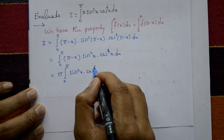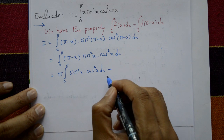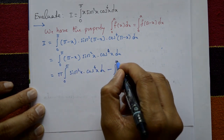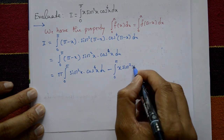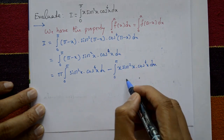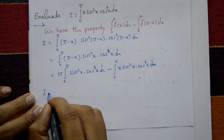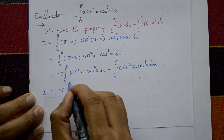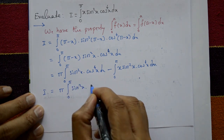π is a constant, so take it outside: π·∫₀^π sin²x·cos⁴x dx, minus the integration from 0 to π of x·sin²x·cos⁴x dx. This second part is I. So I = π·∫₀^π sin²x·cos⁴x dx − I.